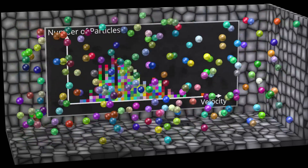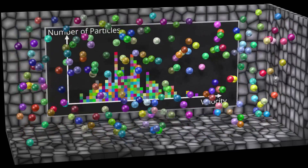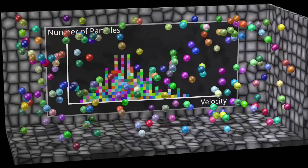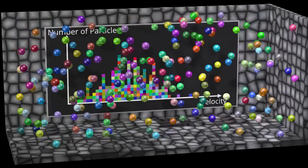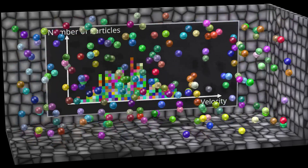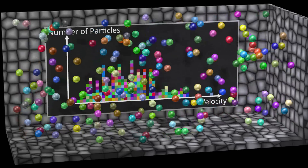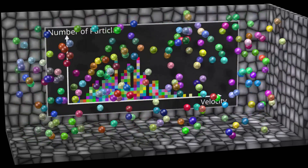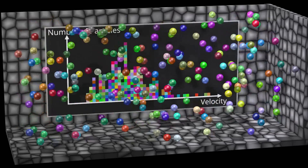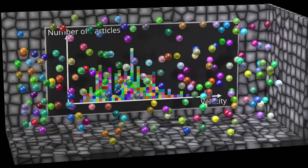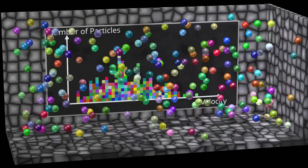If all the particles hypothetically had the exact same energy, then this would have a lower entropy, because there is a smaller number of different ways in which all the particles can have the exact same velocity magnitude. There is a much larger number of ways in which the velocity magnitudes can be dispersed on the graph as shown, and this velocity distribution is what we get when the entropy is at its maximum, for this given temperature.